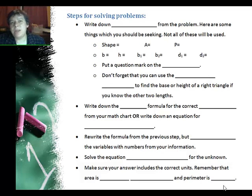So what are some steps for using the area and perimeter formulas? First of all, you should always write down the information from the problem. Here's some things you could be looking for. First of all, you should know what kind of shape it is.